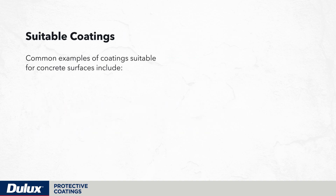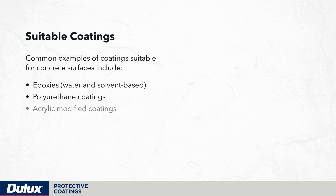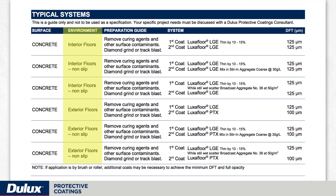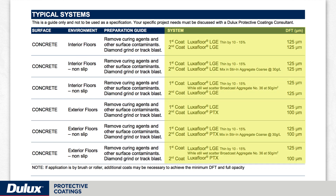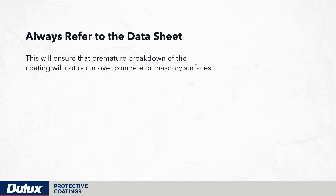Common examples of coatings suitable for concrete surfaces include epoxies — water and solvent based — polyurethane coatings, acrylic modified coatings and a number of other specialty variations. Depending on the environment where the structure will be placed, it's important to refer to the product data sheet with regards to the types of coatings to be used over concrete, the dry film thicknesses and the overall system. This will ensure that premature breakdown of the coating will not occur over concrete or masonry surfaces.